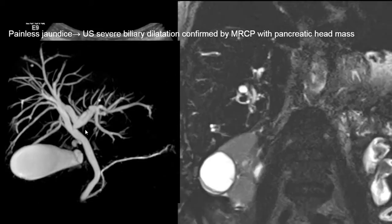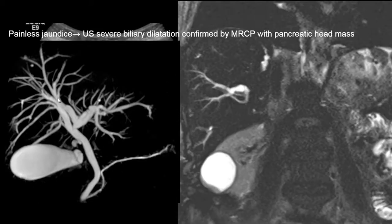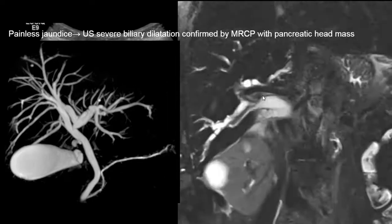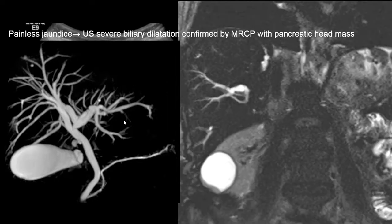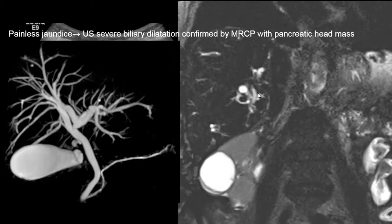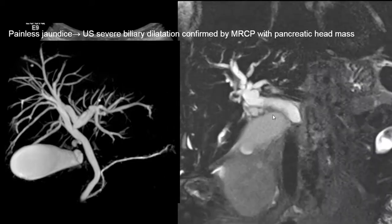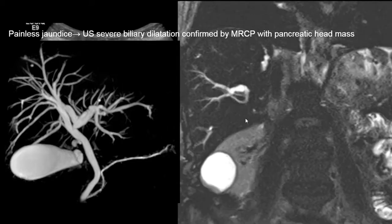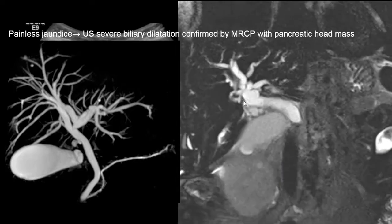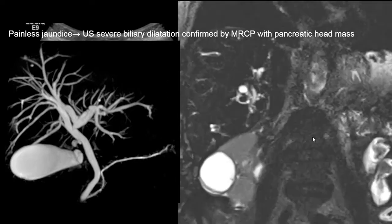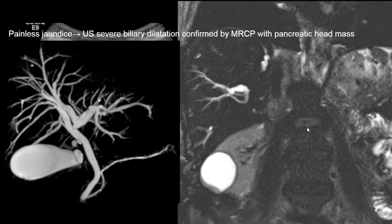This is an example of what a normal bile duct system should look like on MRCP. In comparison, the abnormal MRCP images demonstrate severely dilated intra- and extrahepatic bile ducts from an obstructing pancreatic mass.